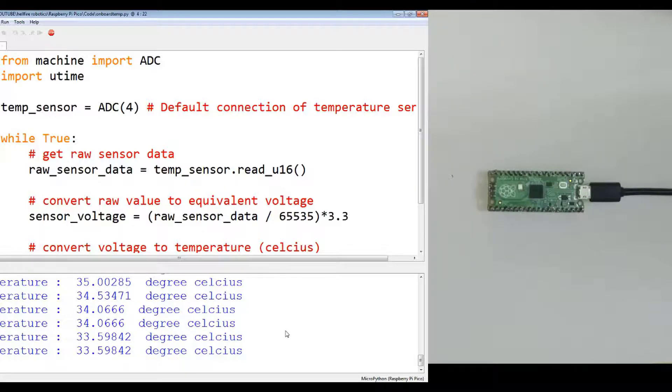We can see that the temperature sensor is working, but note that because the sensor is inbuilt and integrated into the silicon, it will always show a value which is slightly higher than the ambient. This is because the two cores of this Pico are also working and generating some internal heat. So you have to calibrate the sensor and use accordingly.